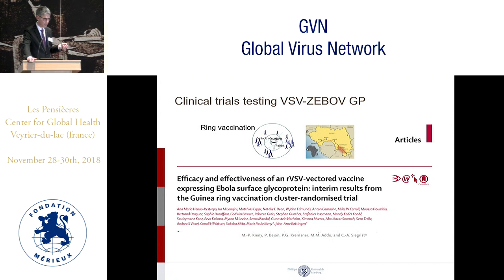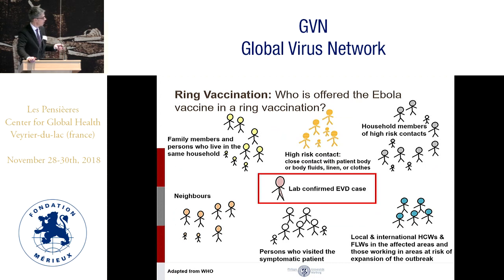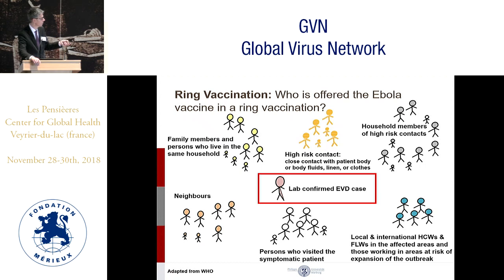This was at the end of the West African outbreak with only very few cases available for testing. It was possible because of a ring vaccination strategy — the same strategy used during the eradication of smallpox. In ring vaccination, you take a lab-confirmed Ebola case and vaccinate the high-risk contacts, persons who visited the symptomatic patient, healthcare workers and frontline workers, then the contacts of contacts, family members in the same household, and neighbors — essentially creating a safety belt around the patient.